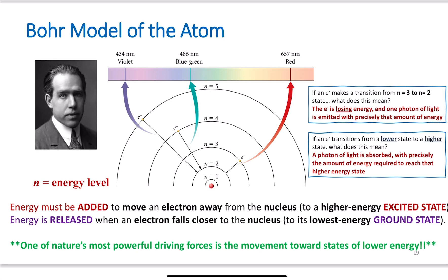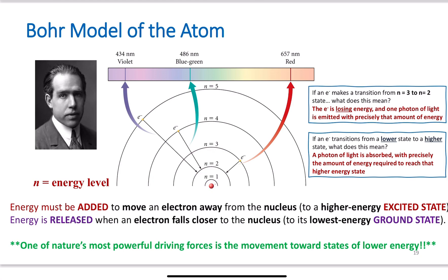Basically, what Bohr figured out was that electrons are traveling in specific orbits. In the center we have your nucleus — the red dot in the center — and then we have n equals 1, n equals 2, n equals 3, n equals 4, n equals 5, going up to infinity. The n value here is the energy level. Each transition — each time an electron gains energy is an absorption, or releases energy is an emission.